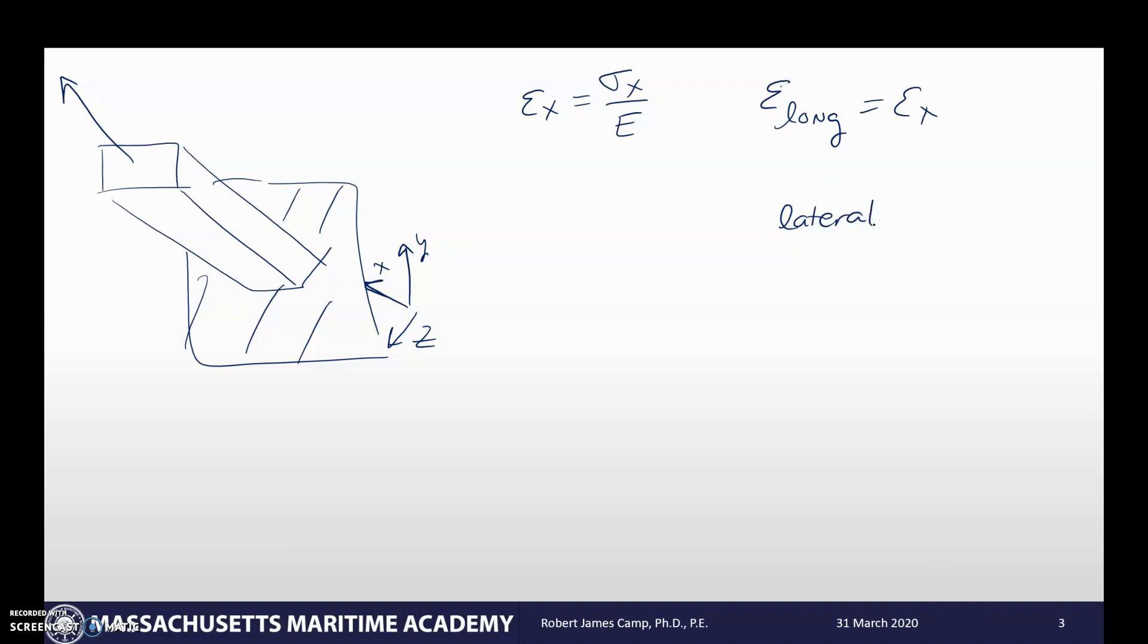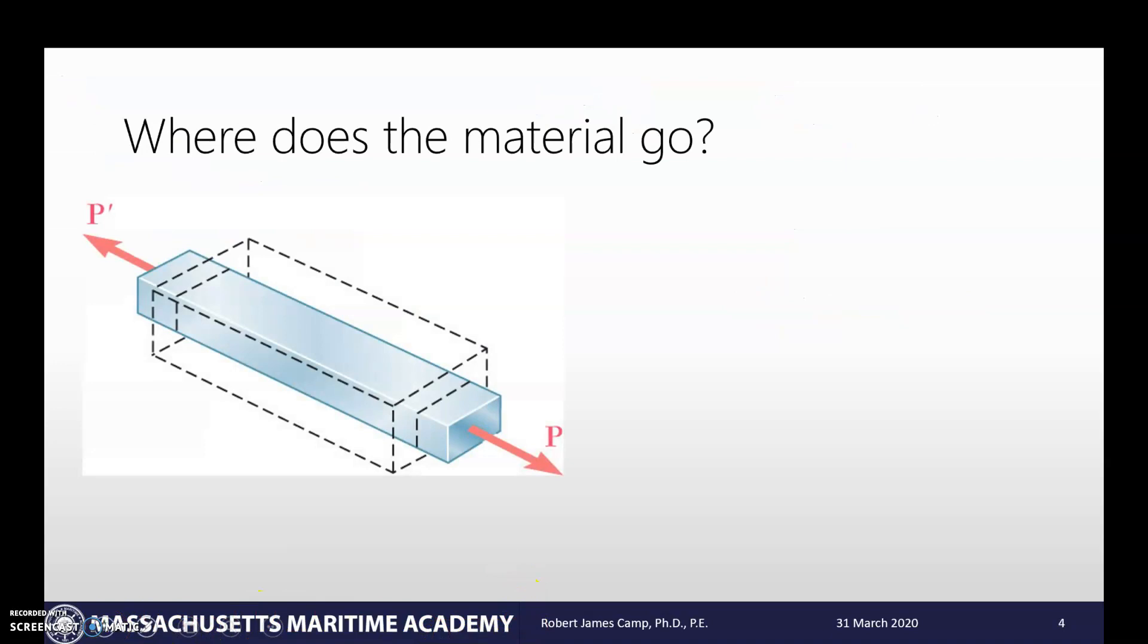And so that material is coming from what we call the lateral direction. So the lateral direction are the two off axis. So what I would call this would be E lat or the lateral strain. That would be the strain in the y direction and the strain in the z direction. So again, when I look at this picture, as you see this, it's getting longer along the longitudinal axis. It has to shrink in the lateral axis.